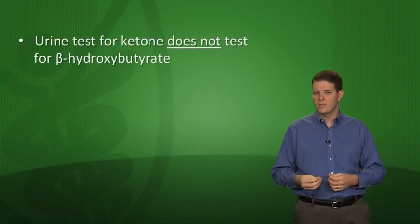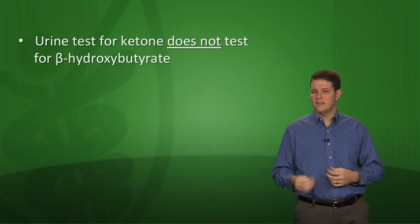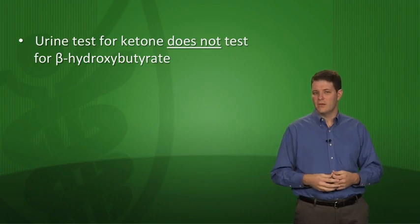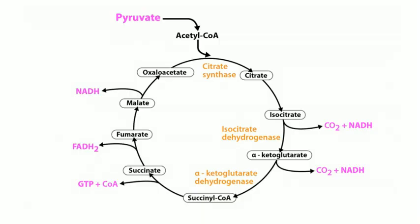Another important point: when you test for ketones in the urine of a DKA patient, you're actually only testing for acetoacetate. The urine test for ketones does not test for beta-hydroxybutyrate.